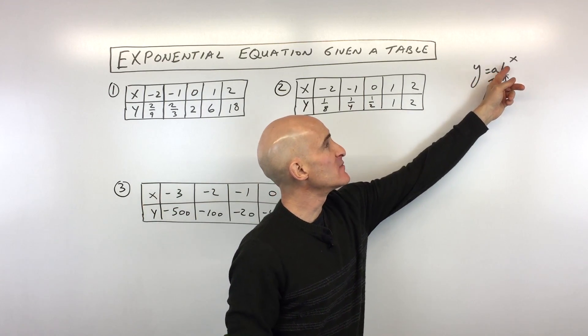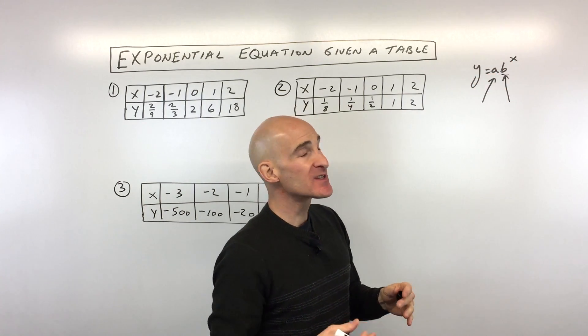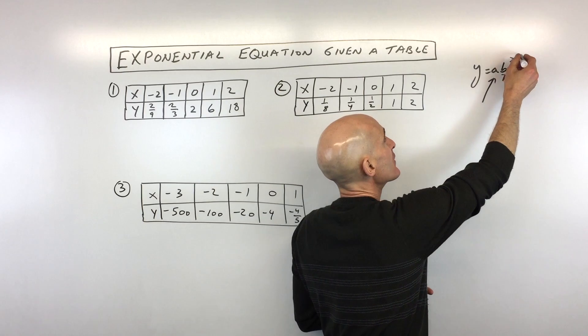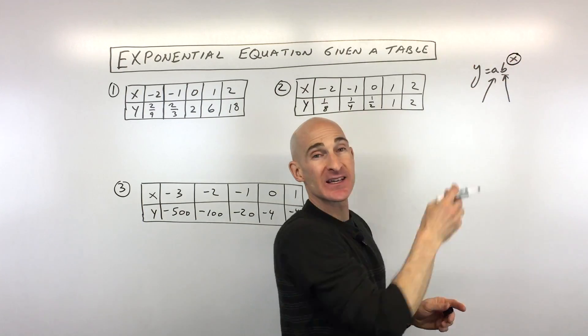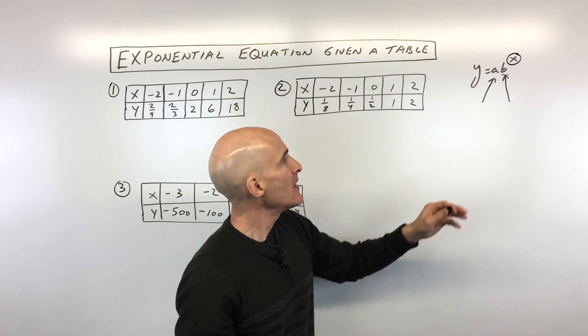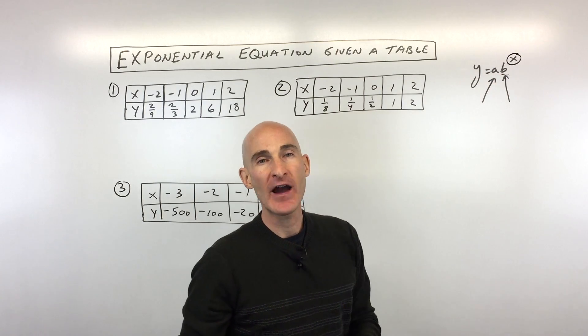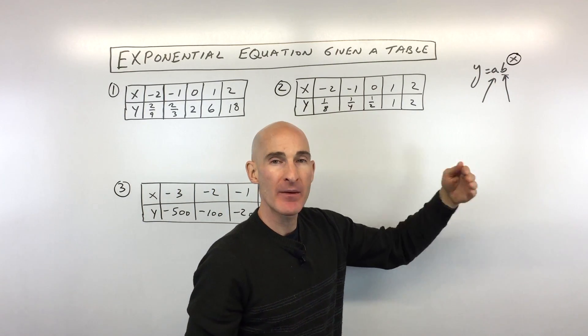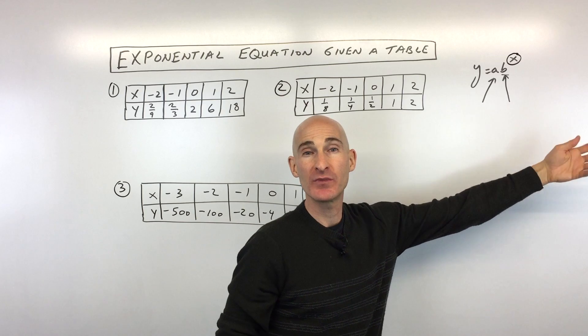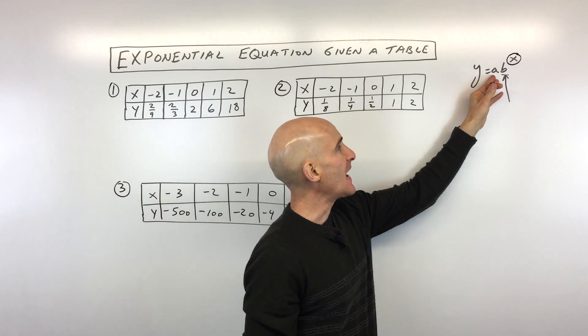Y equals a times b to the x power. Notice this is an exponential equation because the variable is in that exponent, that power position. The b is what they call the growth factor or decay factor—it's what we're multiplying by to get to the next term, next term, and next term.